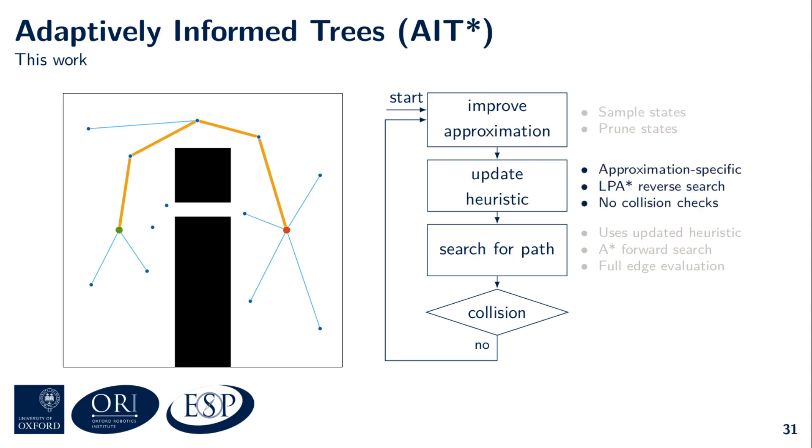Again, this is done using an LPA* reverse search without performing collision detection on the edges. Having updated the heuristic, AIT* can now use it in its forward search for a better collision-free path.